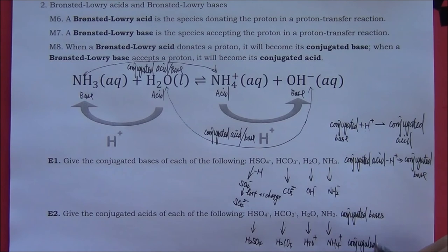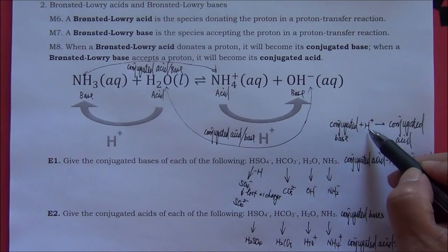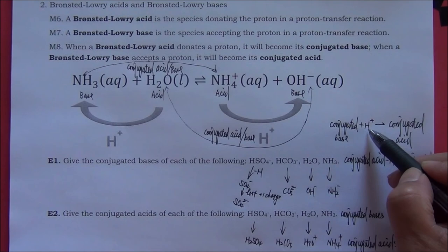Let's review what we learned. A conjugate base plus a proton — a hydrogen ion — becomes the conjugate acid. And a conjugate acid that loses a proton — a hydrogen ion — becomes the conjugate base.